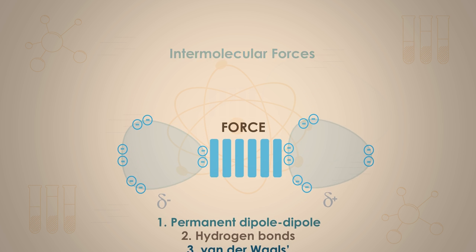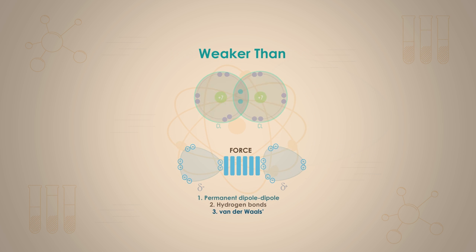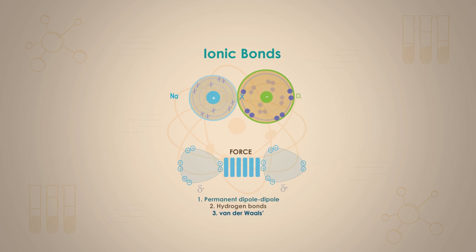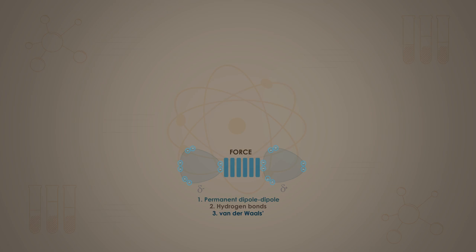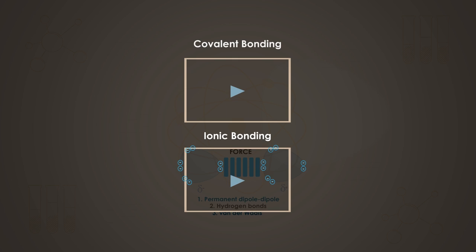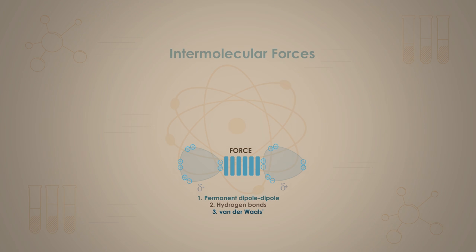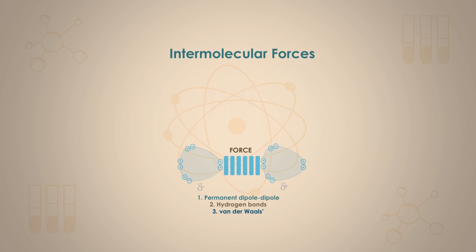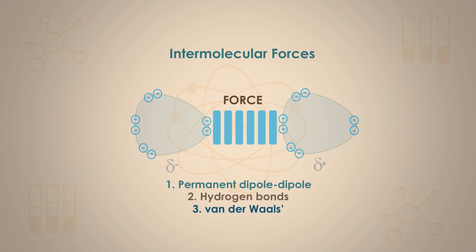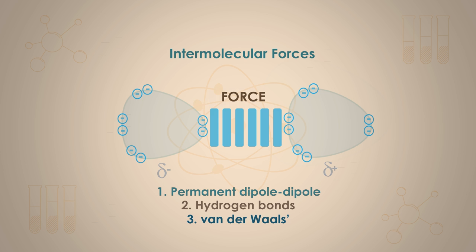All of these three forces are very much weaker than ionic or covalent bonds, which bind atoms and ions together in elements and compounds. We have a video each on ionic and covalent bonds if you haven't learned about them yet. Let us now look at these three intermolecular forces one by one.